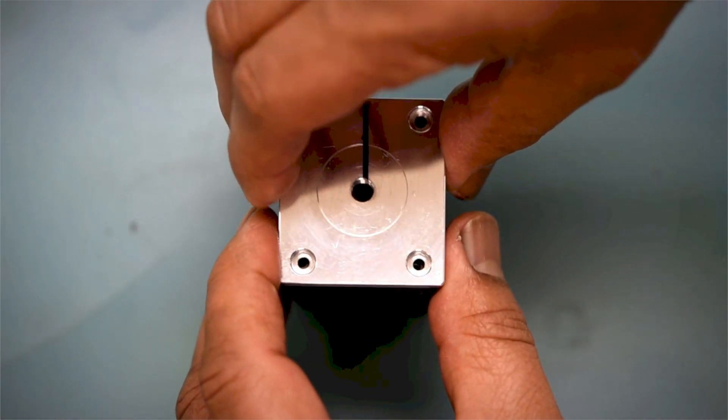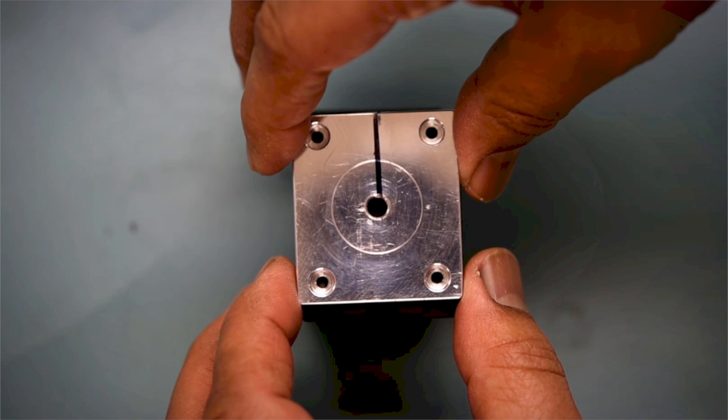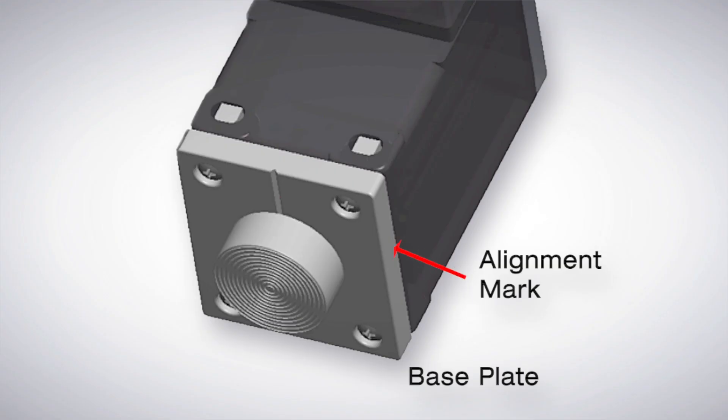The base plate that I'm using is a prototype, so the one you receive won't have my personalized hand-drawn alignment mark. Instead, yours will have a nice cut groove that represents the alignment mark.